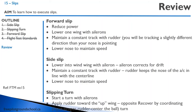Let's review. We have forward slip, side slip, and slipping turn. To do a forward slip, reduce the power, lower one wing with the aileron, maintain a constant track with the rudder — you'll be tracking slightly differently than the nose is pointing — and lower the nose to maintain speed. For a side slip, lower the into-wind wing with the aileron, maintain a constant track with the rudder, and the longitudinal axis is aligned with the track. Lower the nose to maintain speed. For a slipping turn, start a turn with the ailerons, apply rudder toward the up wing, and recover by coordinating the turn.